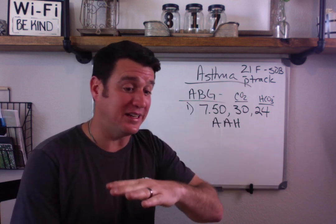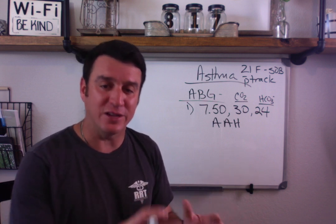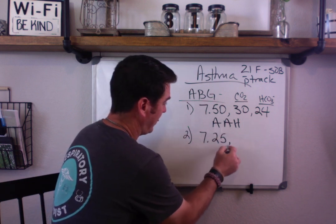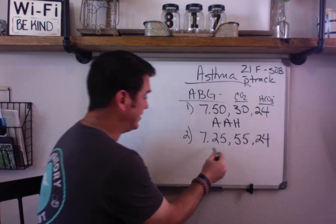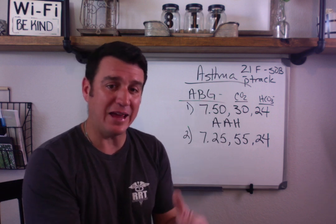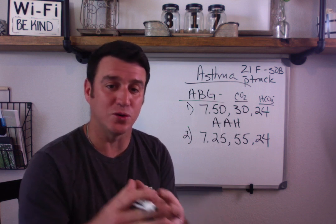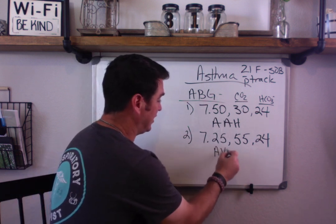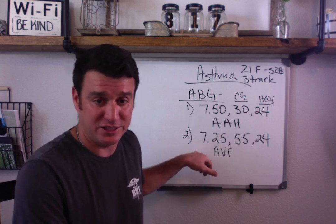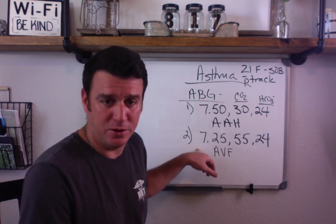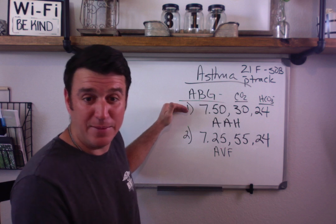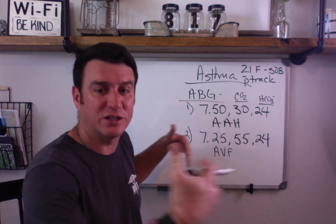If the patient waited too long and this became an obvious medical emergency, you might find a pH of 7.25, CO2 of 55, and bicarb of 24. This is an uncompensated respiratory acidosis — also known as acute ventilatory failure. This person needs to be put on a mechanical ventilator because they are not effectively removing CO2. Acute vent failure means mechanical ventilation; acute alveolar hyperventilation means maybe we can keep them off the vent and get their airways opened up.